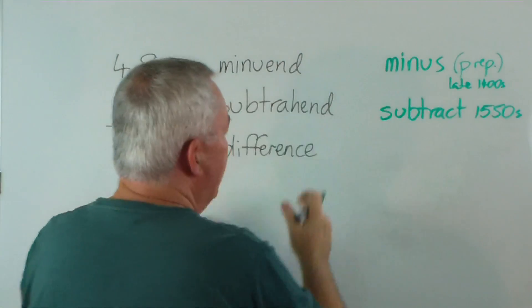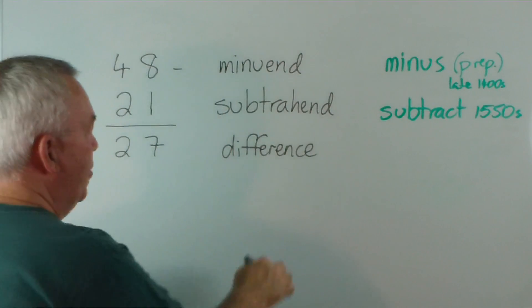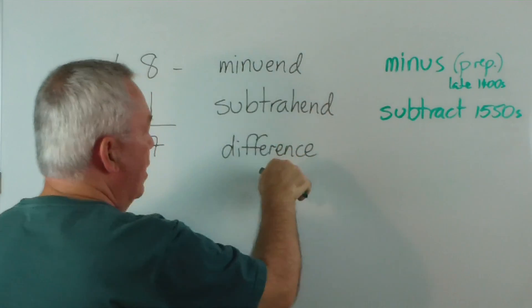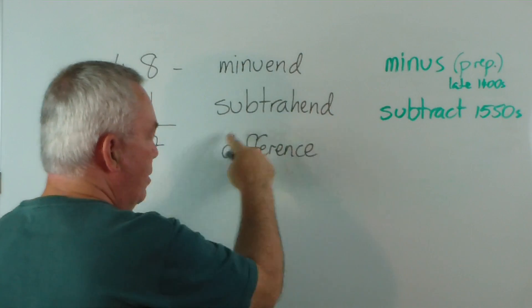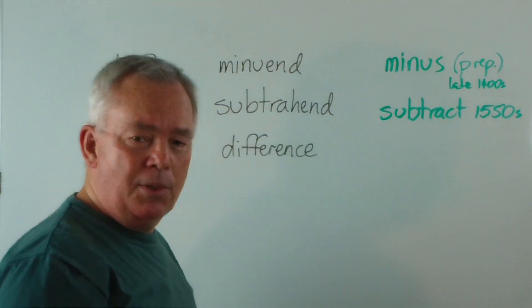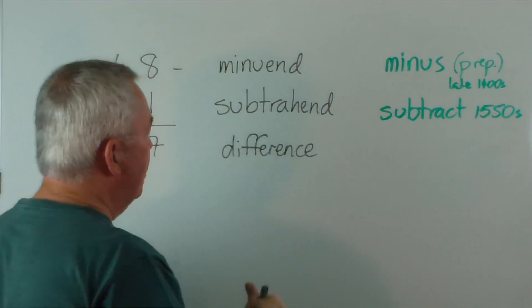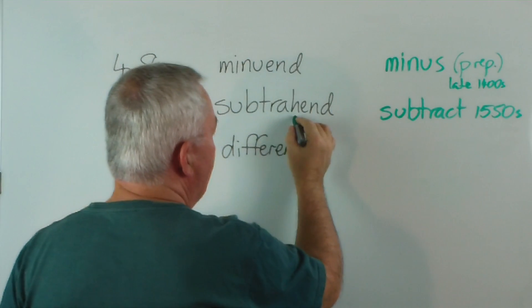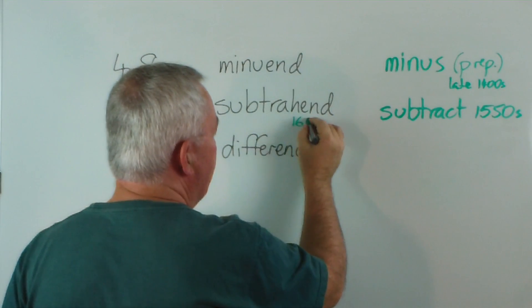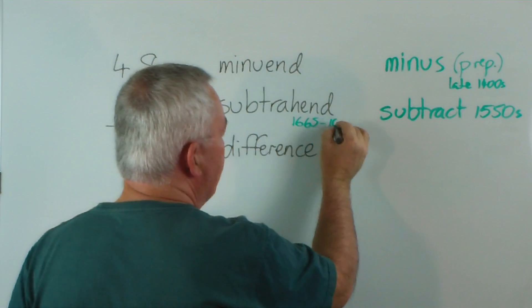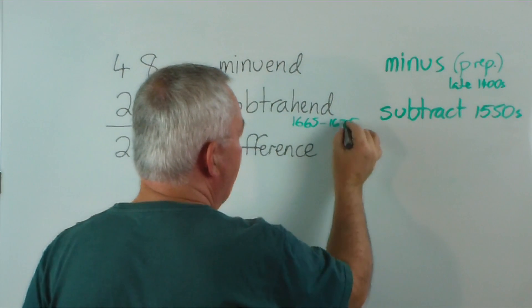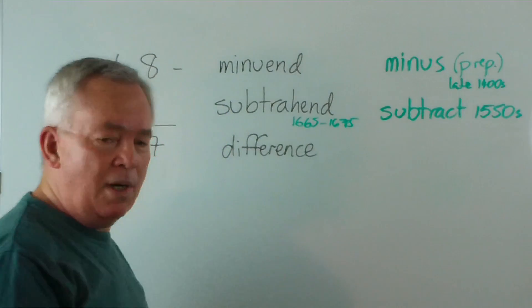Now, these words then came along after that. The first of these three words, I think... I can't find quite when the word difference was applied mathematically. But the word subtrahend was actually used around 1665 to 1675 for the first time. And I find that surprising